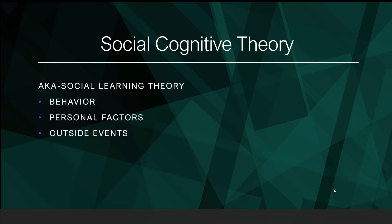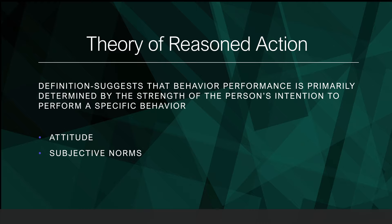The Theory of Reasoned Action suggests that behavior performance is primarily determined by the strength of a person's intention to perform a specific behavior. It identifies two major factors: first, a person's attitude towards the behavior — attitudes being defined as a positive or negative emotion or feeling towards a person, concept, or idea — and second, a person's subjective norms about the behavior. In this theory, subjective norms are defined as the opinion or judgment, positive or negative, that loved ones, friends, family, colleagues, professional organizations, or others may have about a potential behavior.